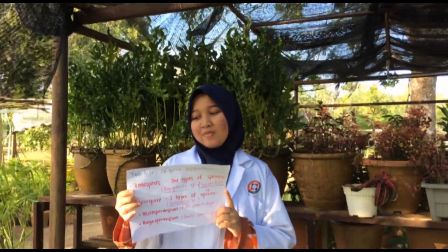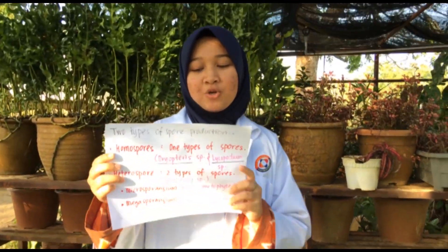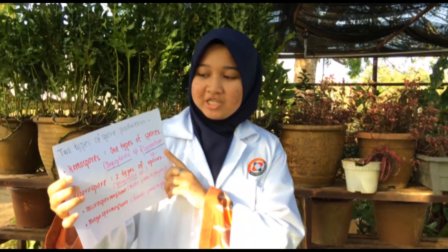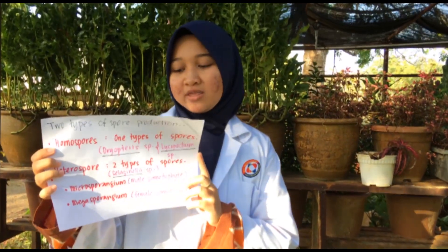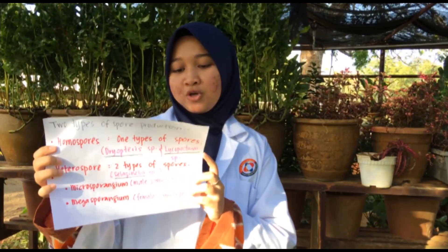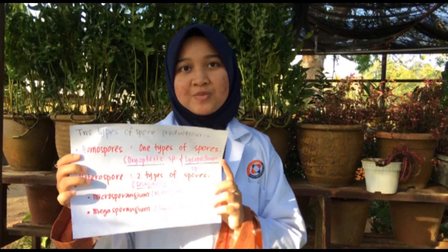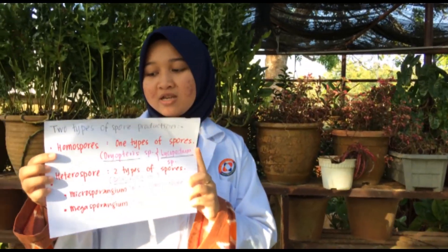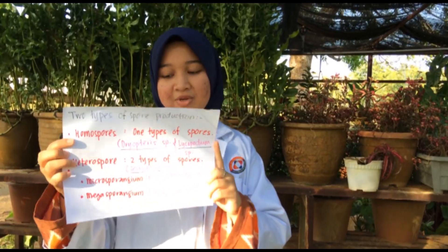I will explain to you about types of spore production. There are two types of spore production. First, Homospore — Homospore is one type of spore. For example, Rhiopteris species and Lycopodium species. Second, Heterospore — Heterospore involves two types of spores. For example, Selaginella species.